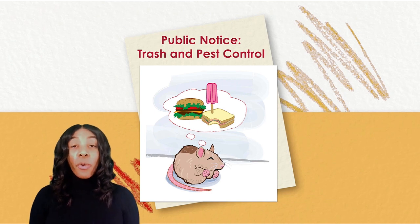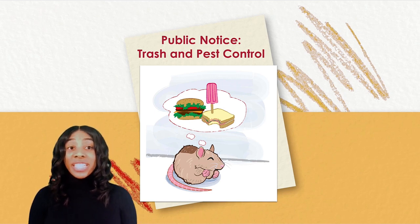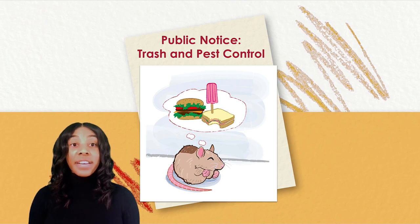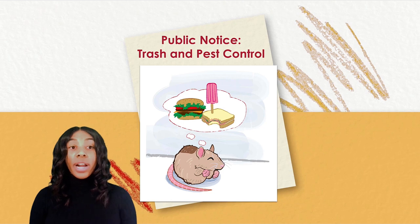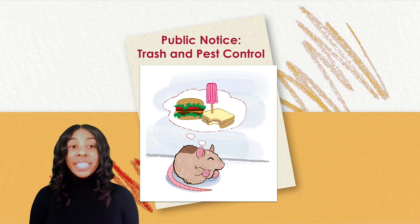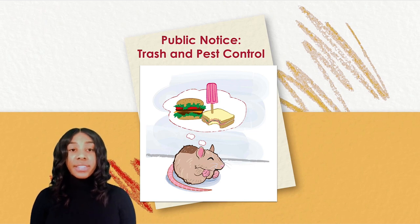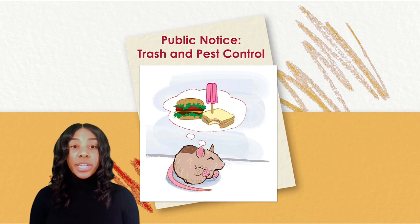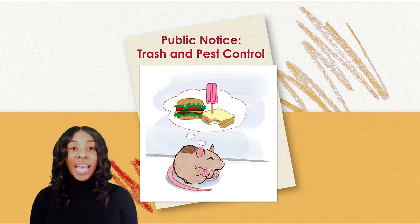Attention! By order of the mayor of Sunnyside, residents should be informed of new rules regarding the containment of trash. In order to keep the streets of Sunnyside clean and to control the population of pests, residents should put all trash in a trash can, dumpster, or other trash container. Close all trash containers tightly at all times. Residents who do not follow these rules will be fined $20 for each offense. Please contact the Office of the Mayor with questions or concerns: 555-123-4567. Thank you for working together to make Sunnyside safe, clean, and beautiful.